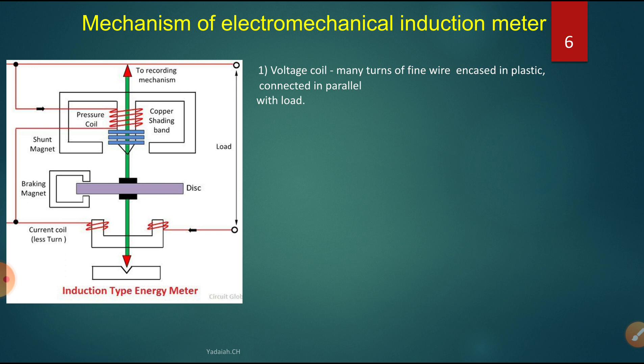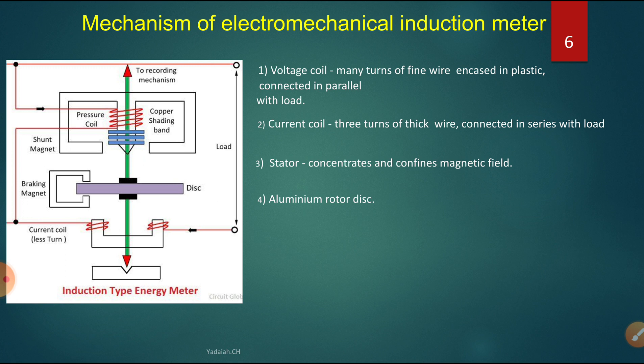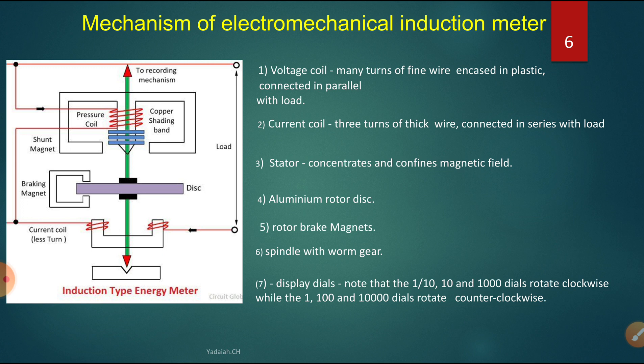To summarize: the voltage coil has many turns of fine wire, encased in plastic, connected in parallel with the load — the pressure coil is always connected in parallel. The current coil has very few turns — maybe three turns of thick wire — connected in series with the load output terminals. The stator concentrates and confines the magnetic field. The aluminum rotor disc is present inside. The driving system produces the rotation, and the rotor braking magnet controls the rotation of the aluminum disc.